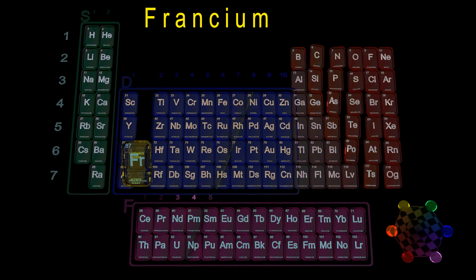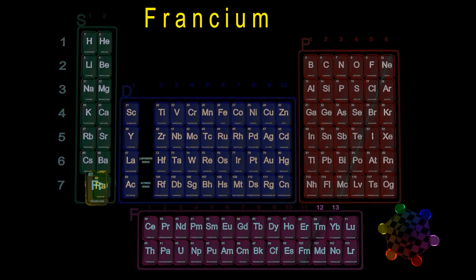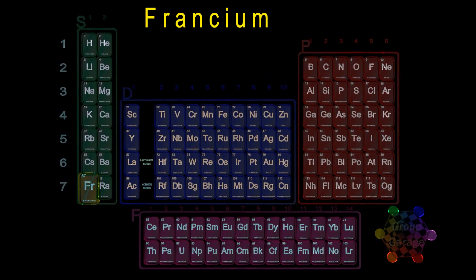We divide the table into the S, P, D, and F subshell regions. We find francium in the alkaline metals, group 1, the very first column in the table, in the S block.